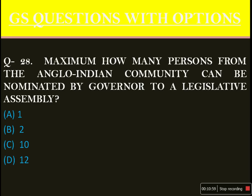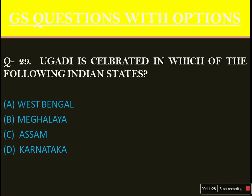Maximum how many persons from the Anglo-Indian community can be nominated by the governor to a legislative assembly? Many got confused and thought they were asking about Lok Sabha, but the answer was option A: the governor can nominate only one person from the Anglo-Indian community to a legislative assembly. Ugadi is celebrated in which of the following Indian states? It is not in West Bengal, Meghalaya, or Assam. The answer is option D: it is celebrated in Karnataka, Telangana, Andhra Pradesh, and Maharashtra.